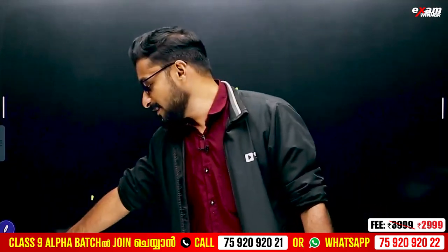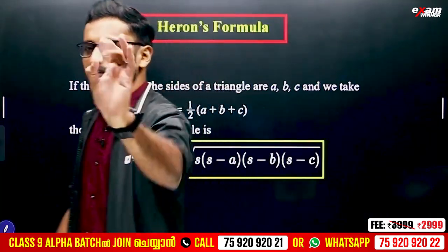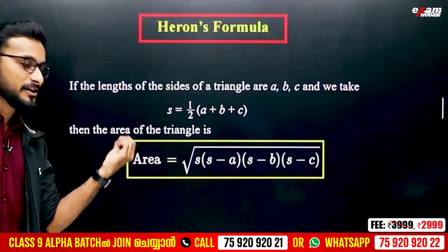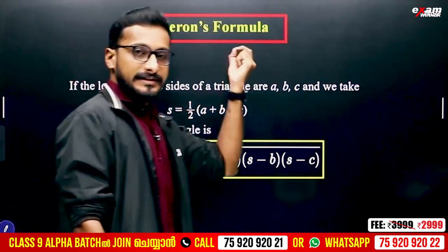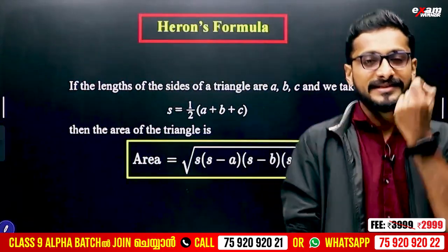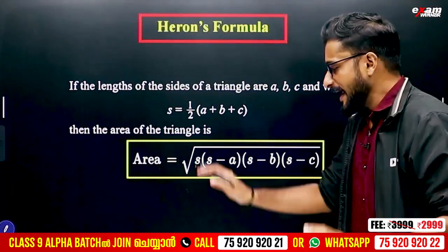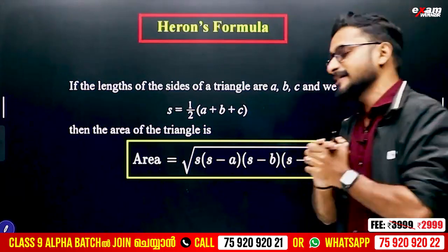Here's the formula. Area A is equal to root of S into S minus A, into S minus B, into S minus C. S into S minus C.